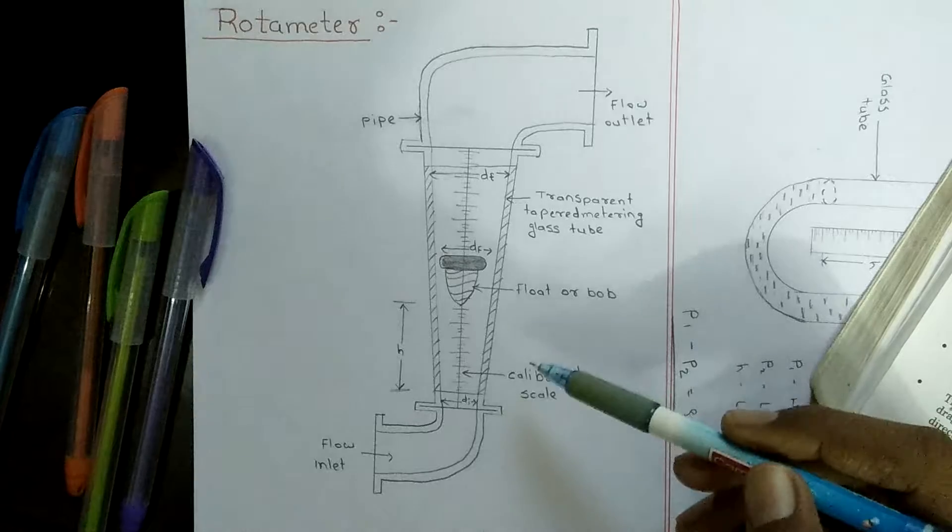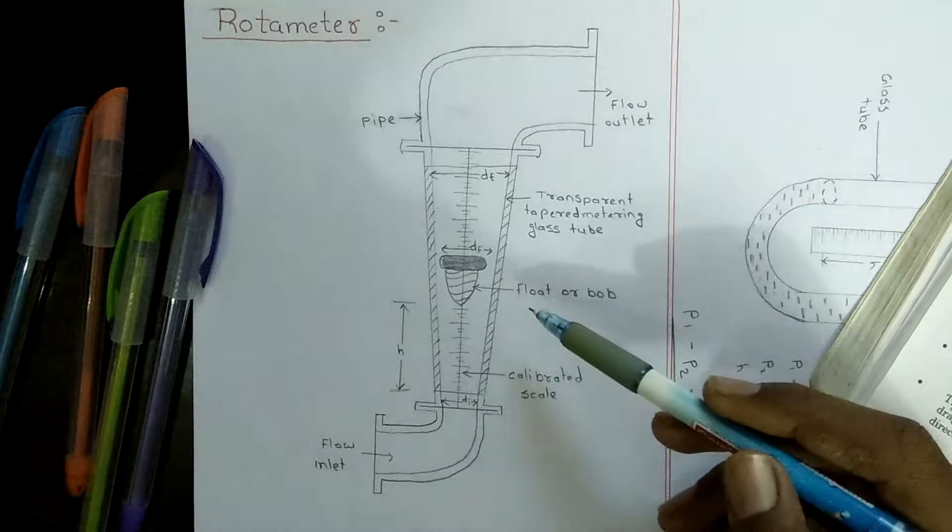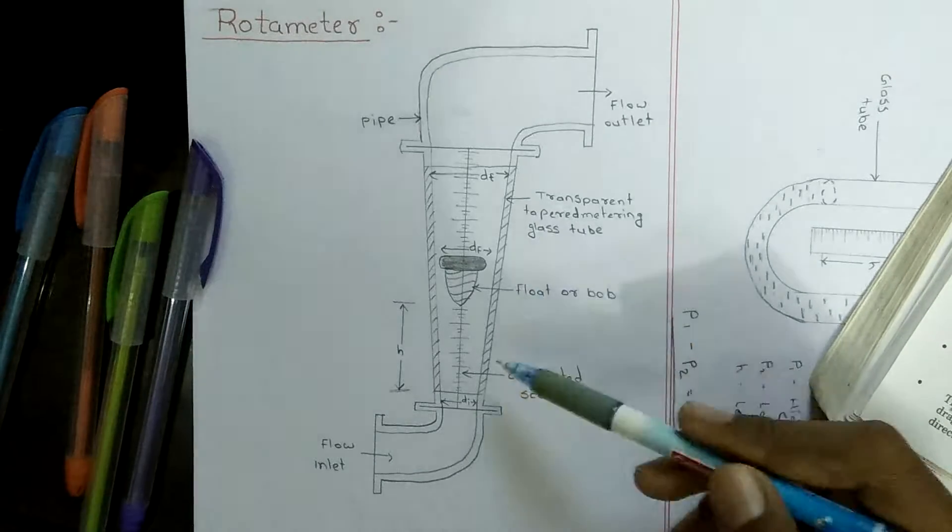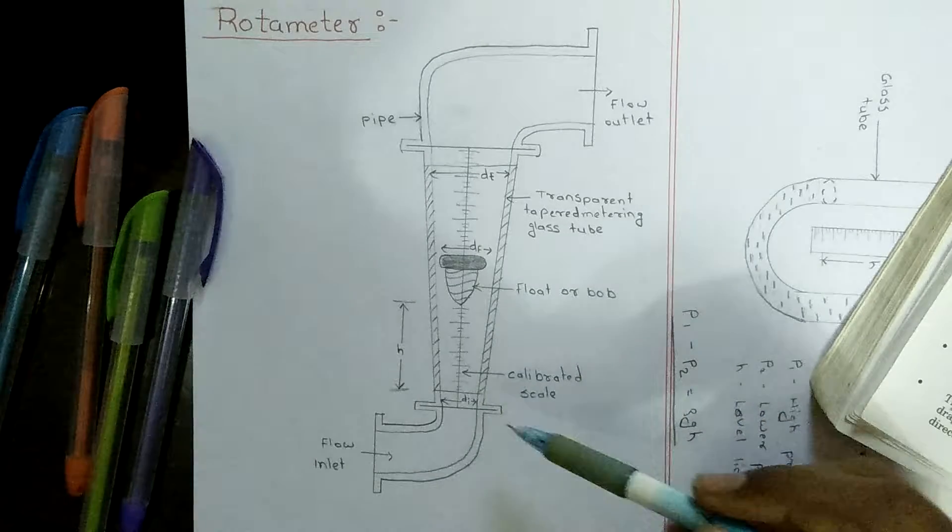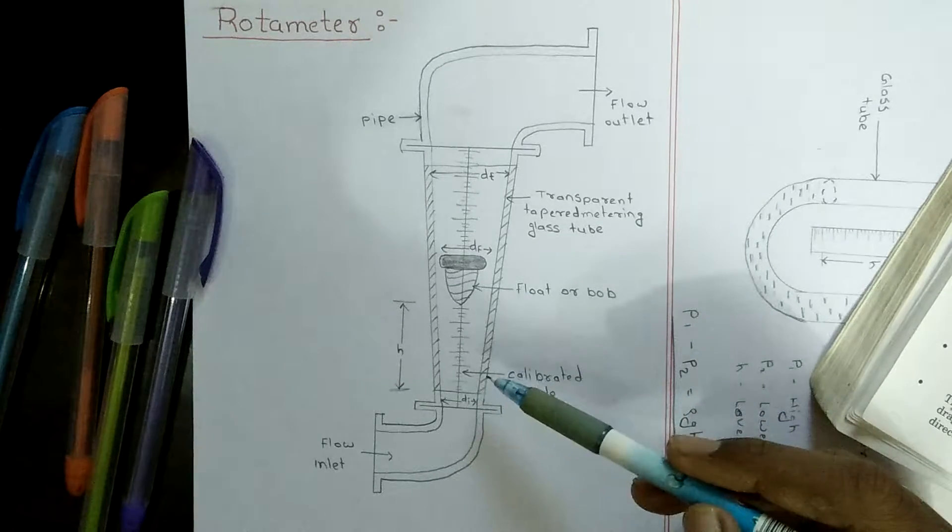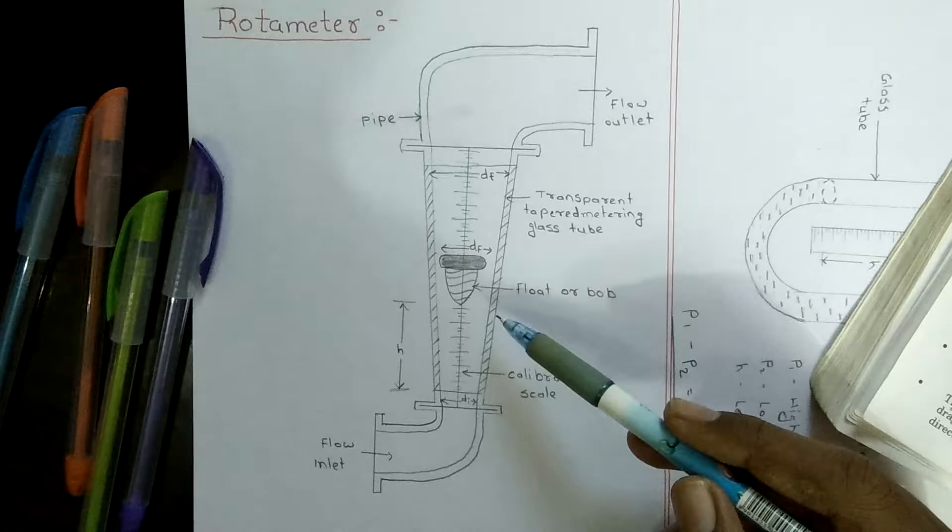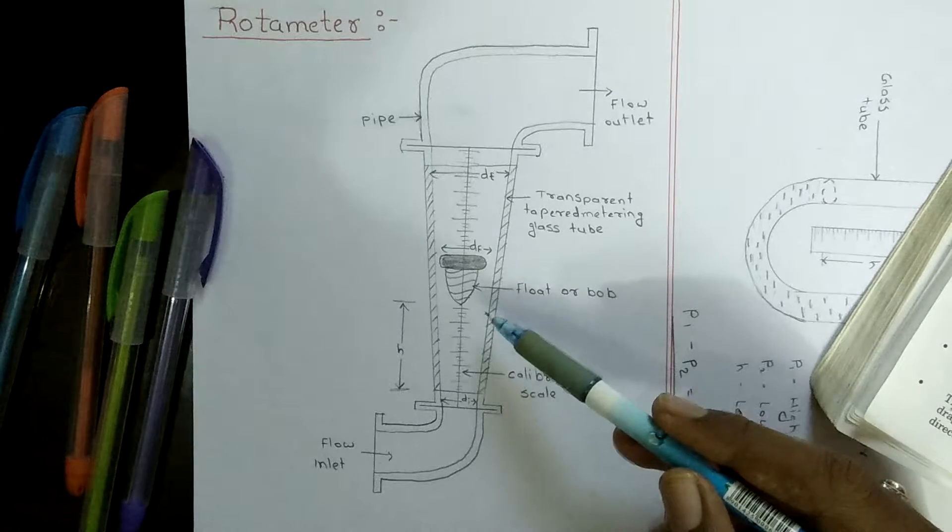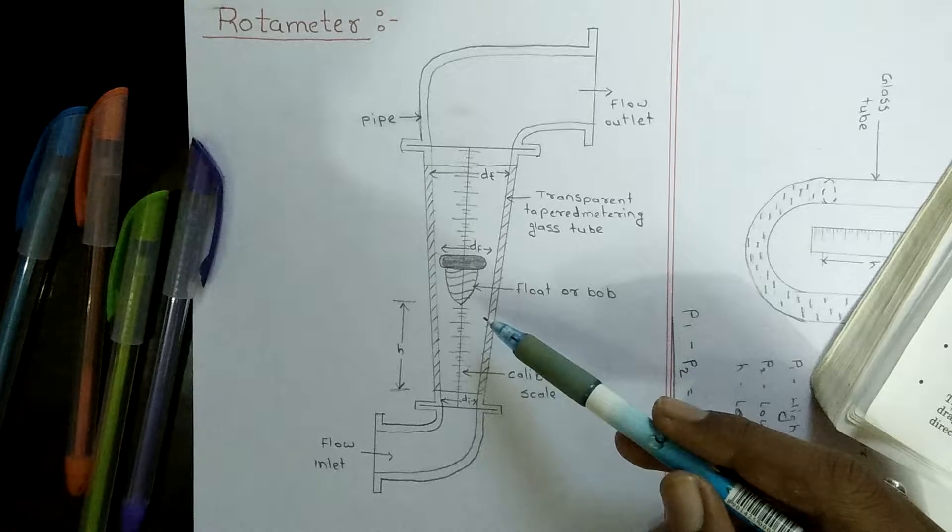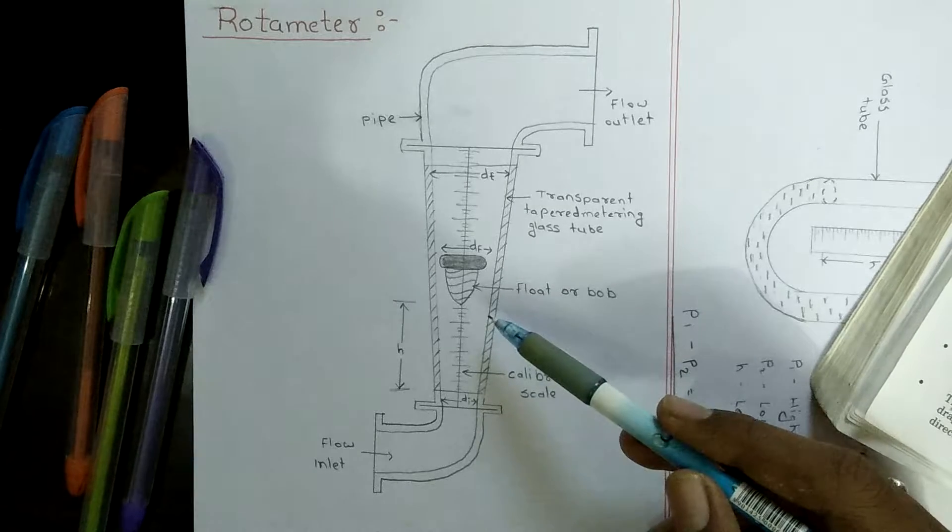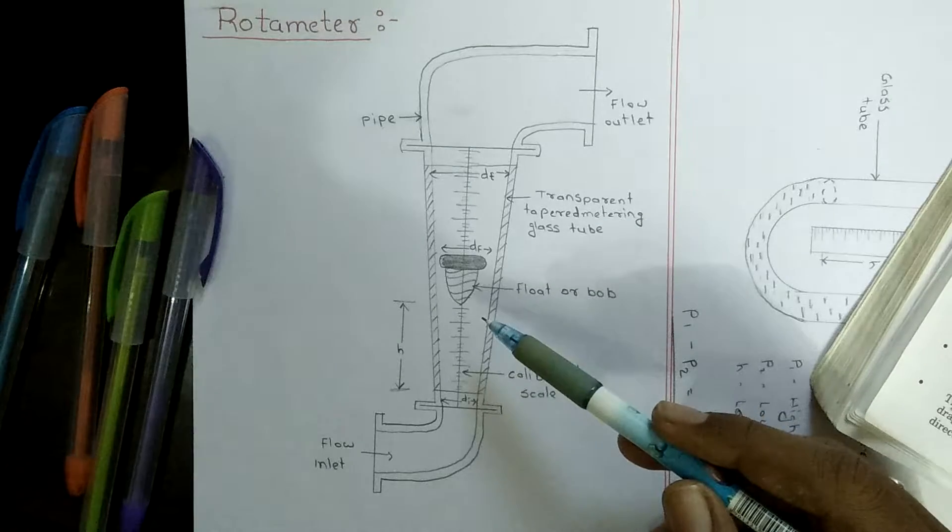The fluid moves the float upwards and downwards. The float will rise to a point in the tube where the upward drag force and buoyancy force is balanced by the downward directed weight of the float.